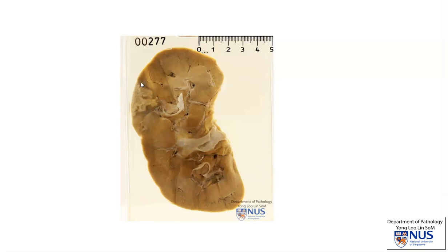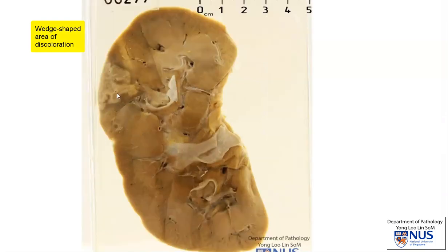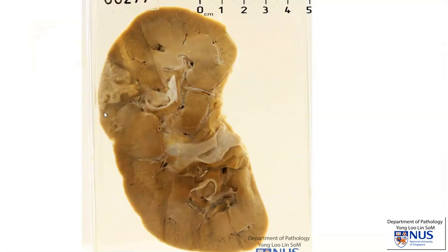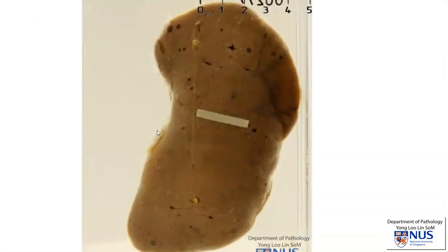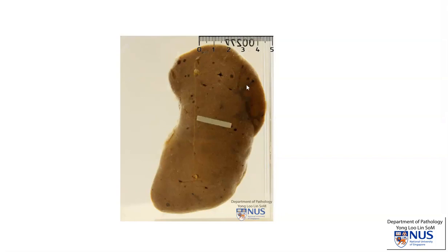There is a localized area of discoloration here, and it is wedge-shaped. It is pale, kind of pale yellowish in color. And there is actually a darker rim around it — this is a rim of hyperemia. And if I turn it around and we look at the capsular surface, we can see just a hint of hyperemia here as well.